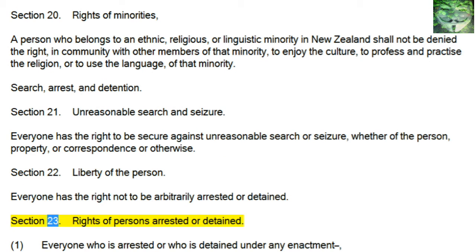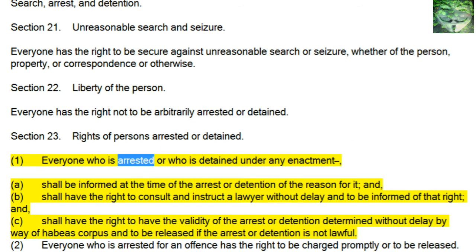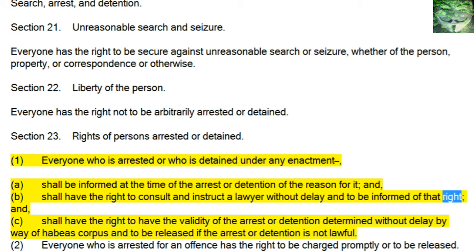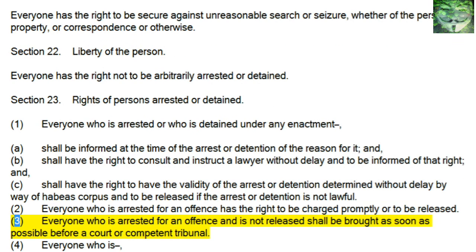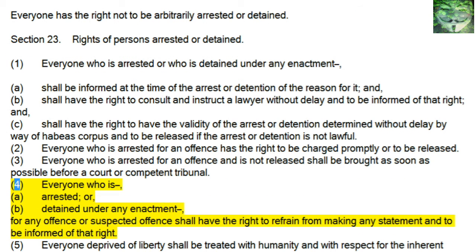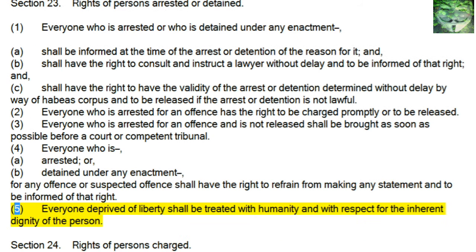Section 23, Rights of Persons Arrested or Detained: 1. Everyone who is arrested or detained under any enactment a. shall be informed at the time of the arrest or detention of the reason for it, and b. shall have the right to consult and instruct a lawyer without delay and to be informed of that right, and c. shall have the right to have the validity of the arrest or detention determined without delay by way of habeas corpus and to be released if the arrest or detention is not lawful. 2. Everyone who is arrested for an offense has the right to be charged promptly or to be released. 3. Everyone who is arrested for an offense and is not released shall be brought as soon as possible before a court or competent tribunal. 4. Everyone who is arrested or detained under any enactment for any offense or suspected offense shall have the right to refrain from making any statement and to be informed of that right. 5. Everyone deprived of liberty shall be treated with humanity and with respect for the inherent dignity of the person.